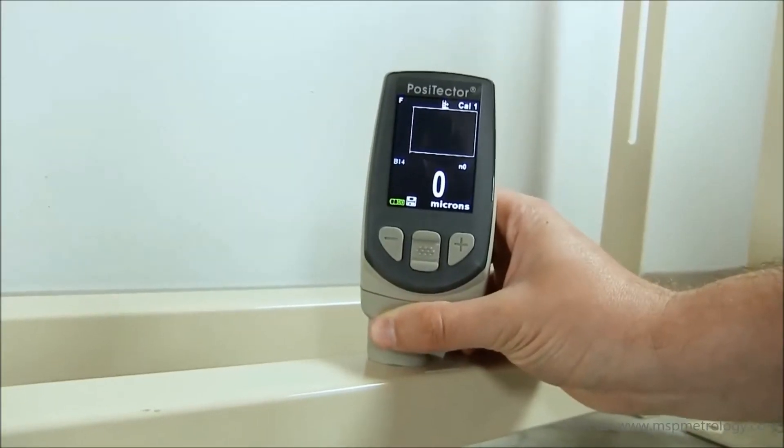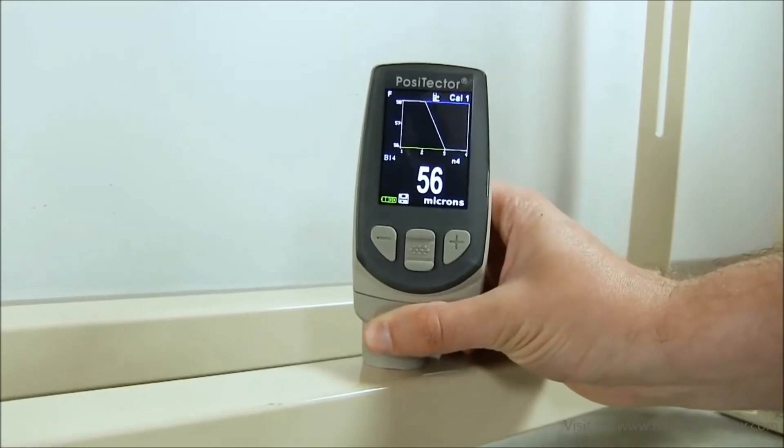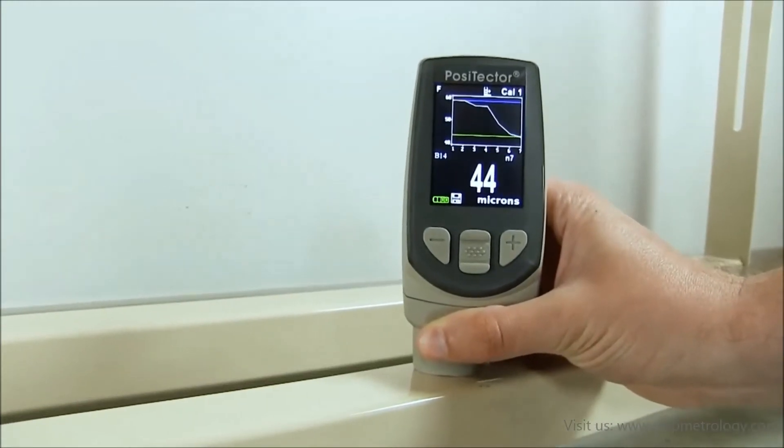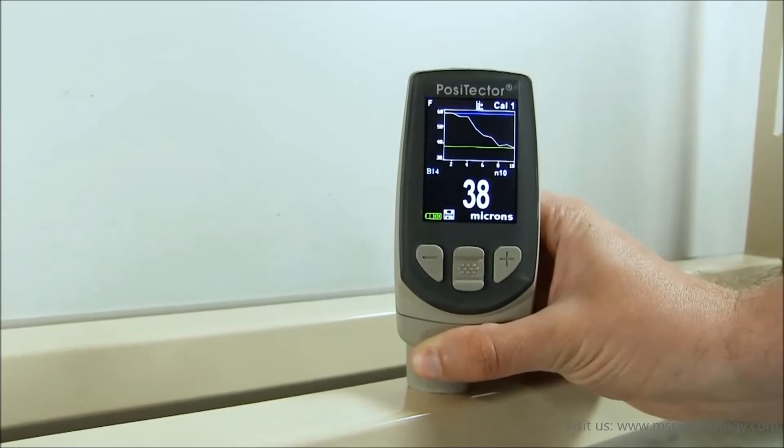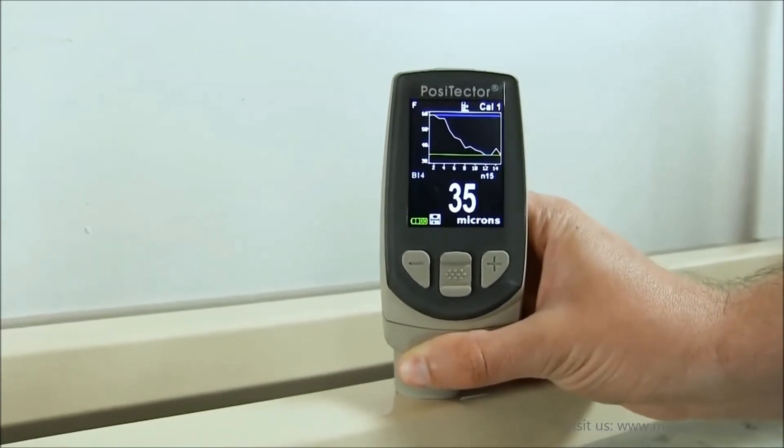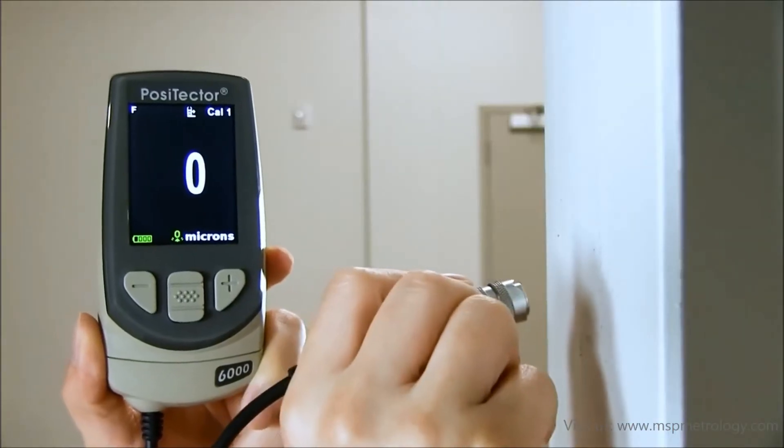In all scan modes, the probe measures continuously when placed on the surface, quickly identifying areas of thin or excessive coating coverage that might be missed using spot checks. There are three ways to scan with the Positector 6000.